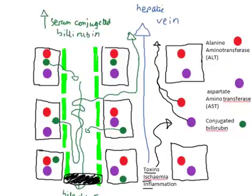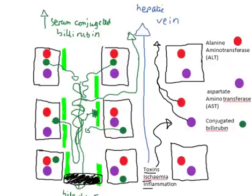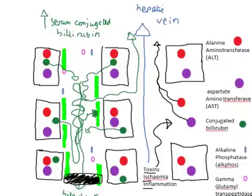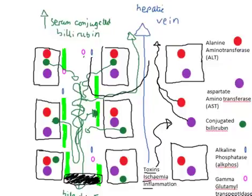As well as causing a raised conjugated bilirubin level, damage within the bile canaliculi themselves can lead to the release of other factors, by damaging the cells which line the canaliculi. These cells contain a range of other enzymes not found in hepatocytes, including gamma-GT and alkaline phosphatase. These can be released when the cells lining the bile duct are damaged, and can then be measured in the systemic circulation when we do our LFTs blood test.